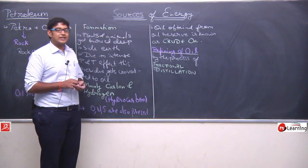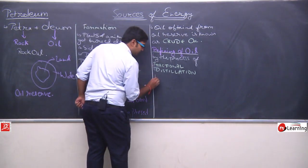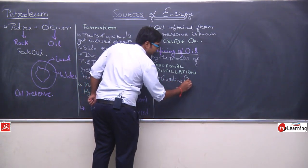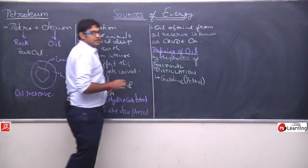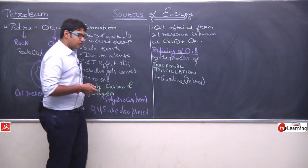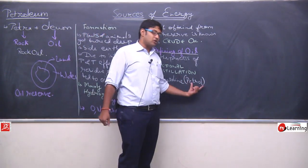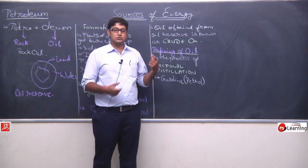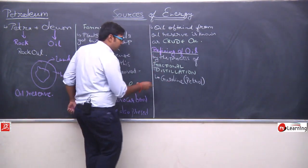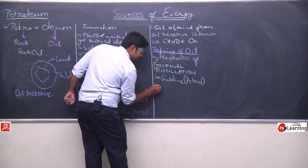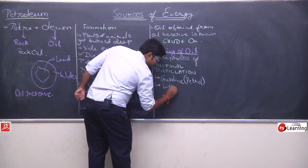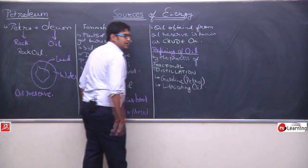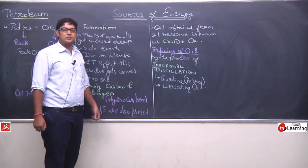Is process se hum oil ko refine karte hain. Aur oil refine karne ke baad humein jo products milte hain — sabse important is gasoline. Gasoline is also known as petrol — jo gaadi mein aap petrol daalte hain, that is technically known as gasoline. Jab aap foreign countries mein jaayenge, they don't call it petrol — woh usse gasoline hi bolte hain. Gasoline ke baad humein milta hai lubricating oil, jo lubrication ke liye use hota hai, jo engine oil jisse hum bolte hain — that is known as lubricating oil.